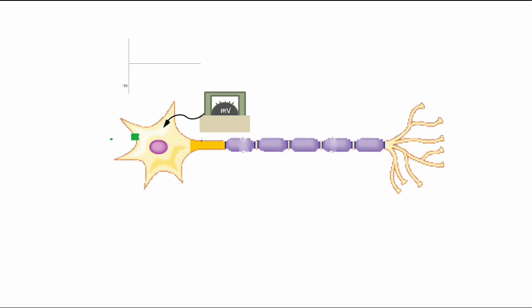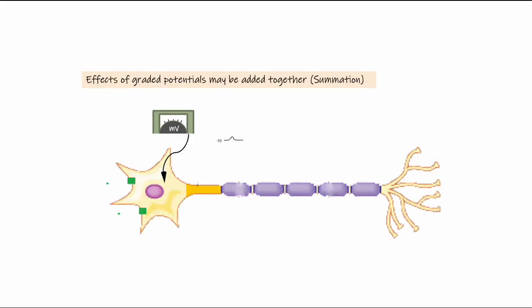In a basic neuron — with cell body, axon, and axon terminals — it is on the cell body where we have receptors. A ligand binds to a ligand-gated receptor drawn in green, indicating an excitatory stimulus. That channel opens, allowing sodium to move into the cell, resulting in an excitatory graded potential as shown.